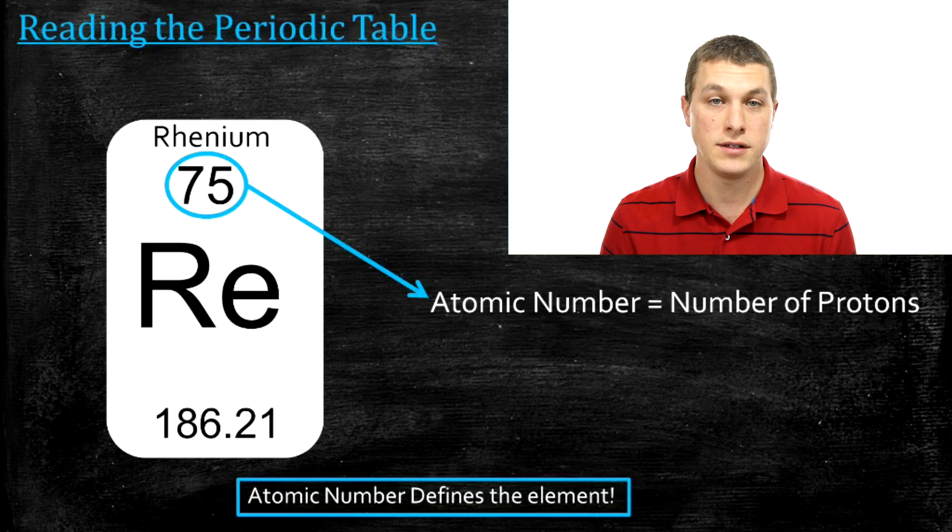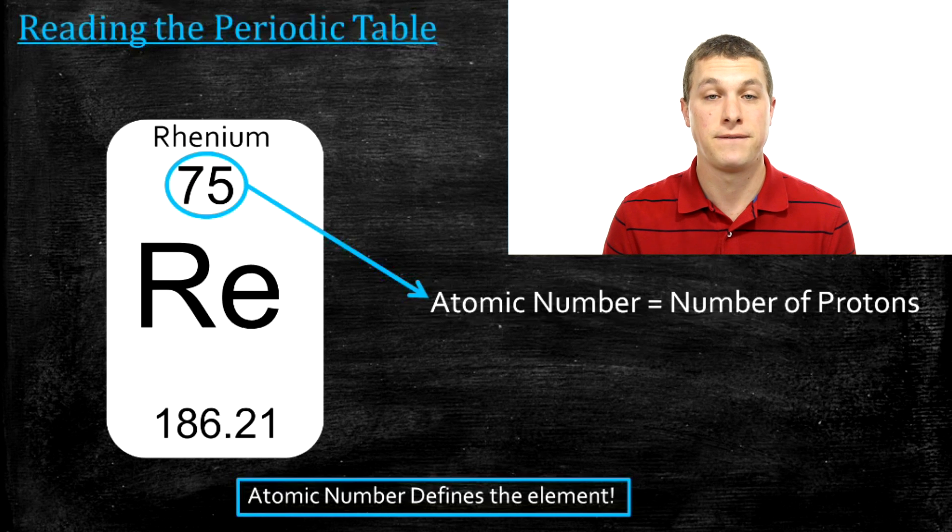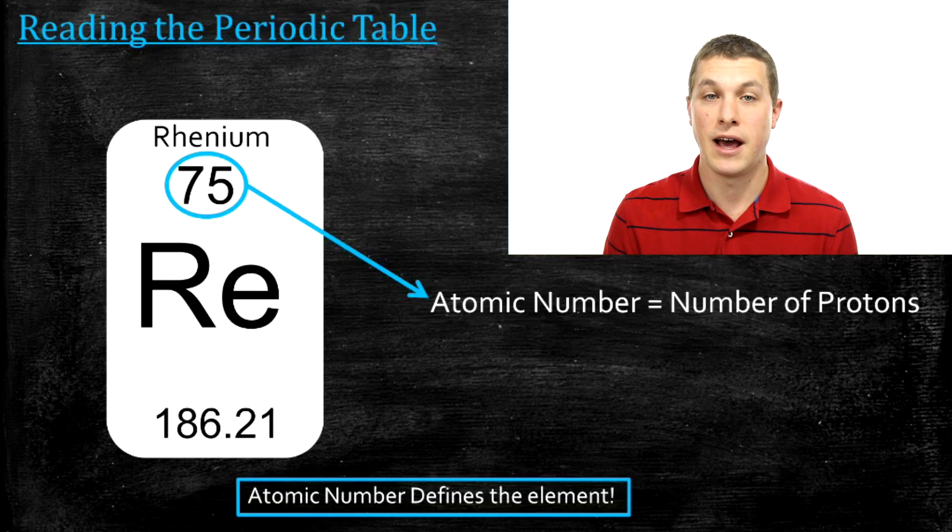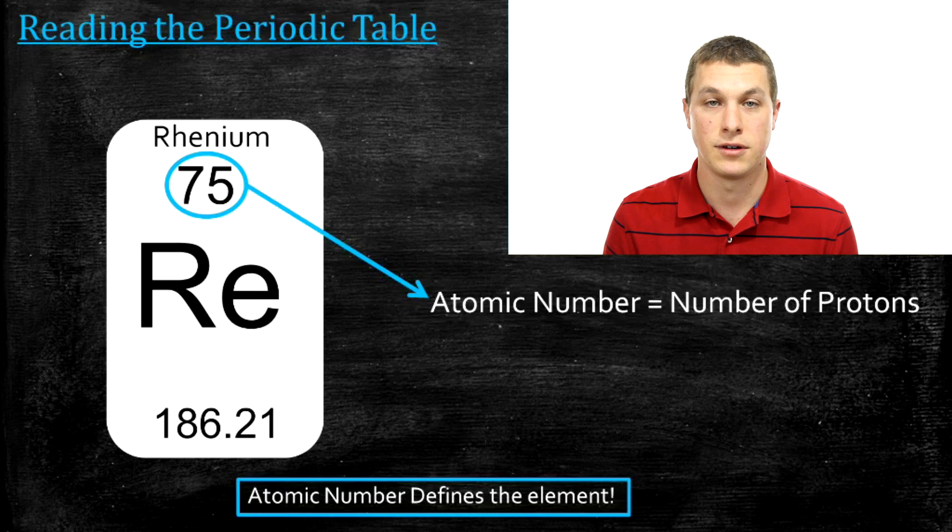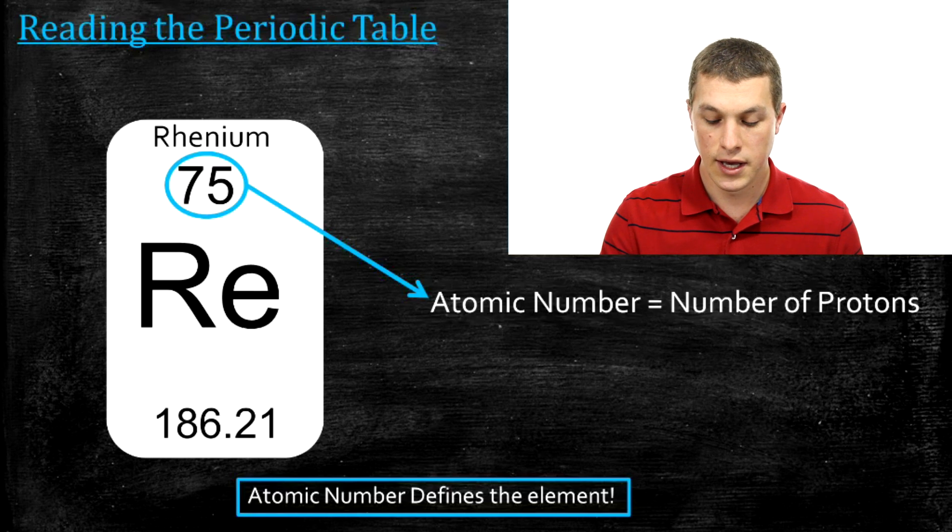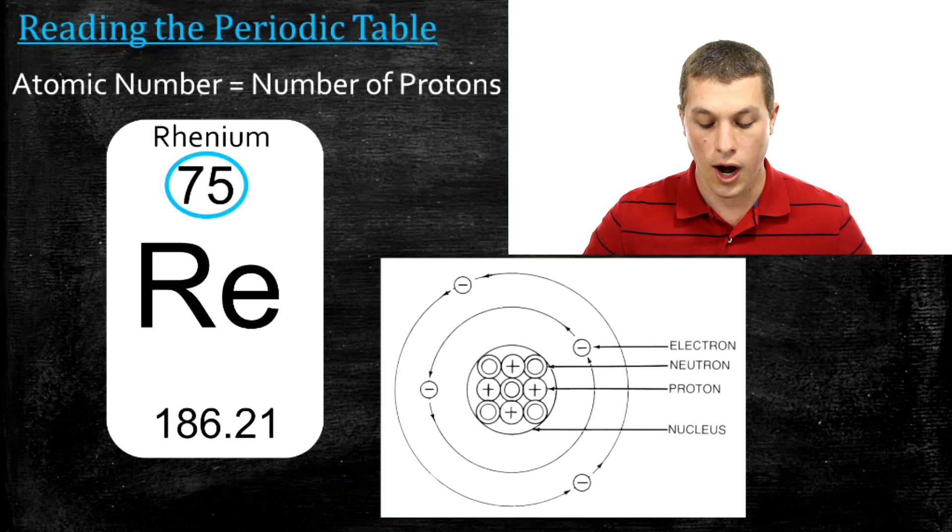The number of protons directly tells you what an element is. If I change the number of protons from 75 to 76, that's a new and different element. So the number of protons defines the element. That's what it is to be an element, say rhenium, is to have 75 protons. Now the other subatomic particles, which we haven't really talked about, are neutrons and electrons. You can change those and it doesn't change the element. But the second you change the number of protons, you change what the element is.